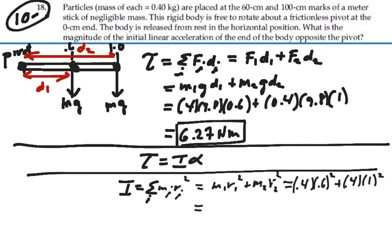0.4 times 0.6 squared, plus 0.4 times 1 squared, is 0.544 kilogram meter squared. So that is our moment of inertia.